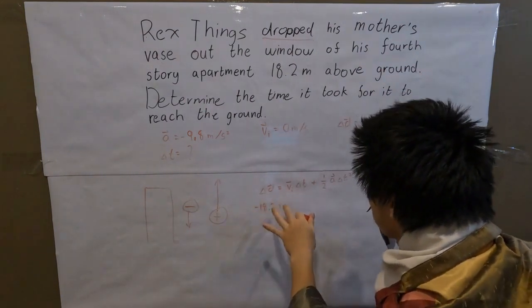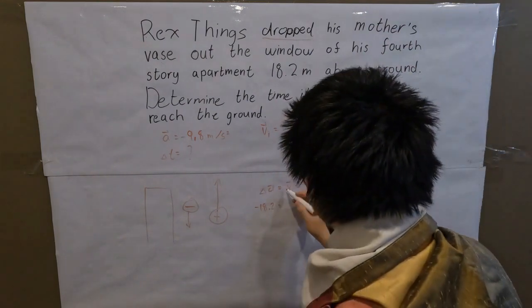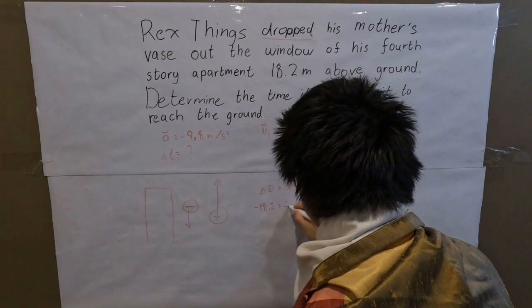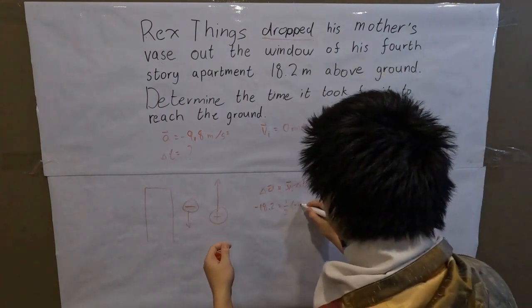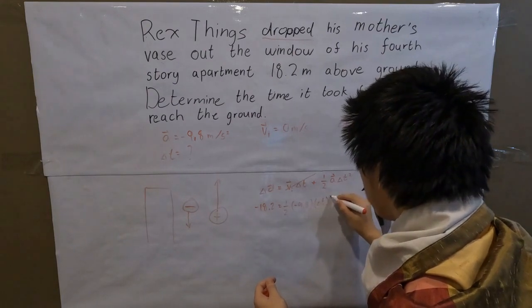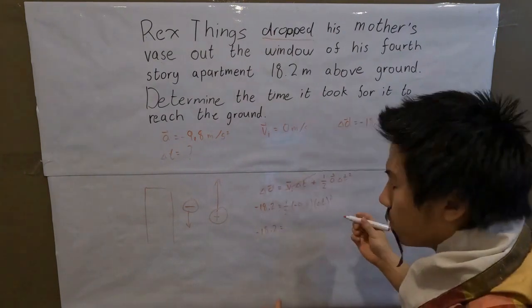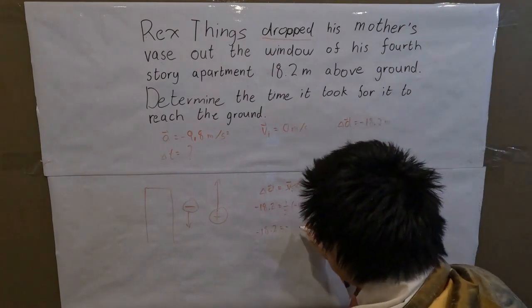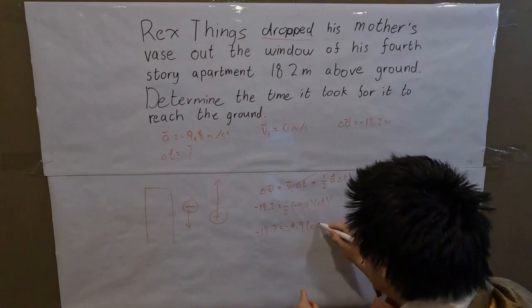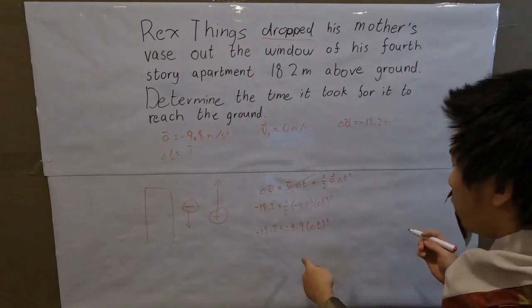Okay, displacement, change in position, is equal to velocity—zero meters per second. It just cancels out. There is no fuss about this. It just vanishes, because zero times anything is zero. So it's gone. Is equal to one-half times acceleration, negative 9.8, times time squared. And we continue: negative 18.2 is equal to—what is 9.8 divided by 2?—negative 4.9, and then multiplied by t squared. And now we want to move this negative 4.9 to the other side so then we can isolate this t squared.